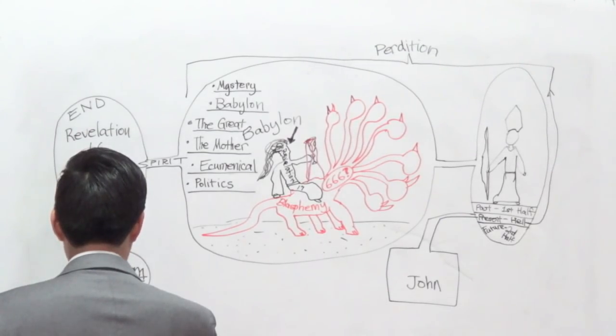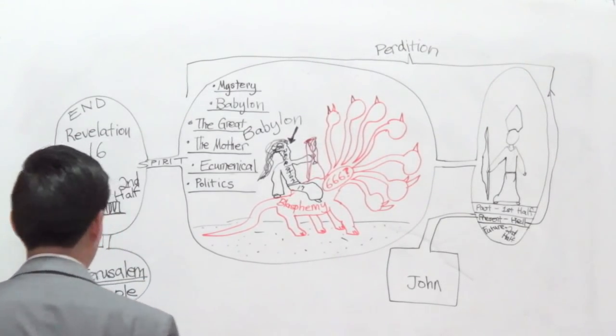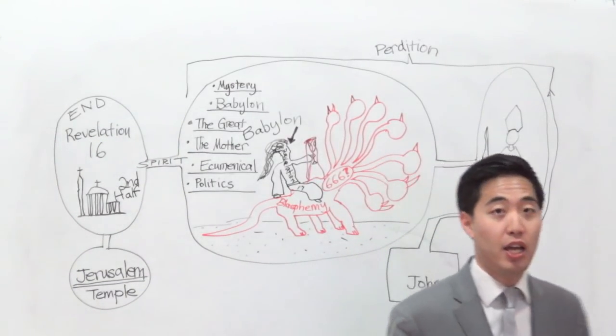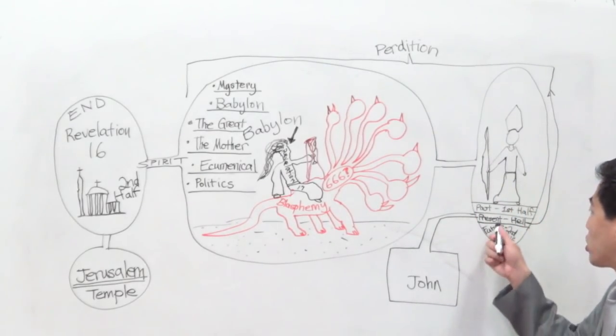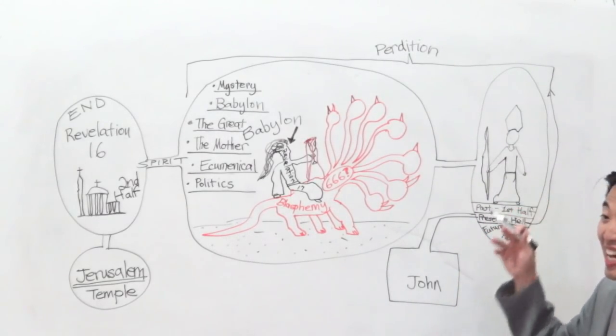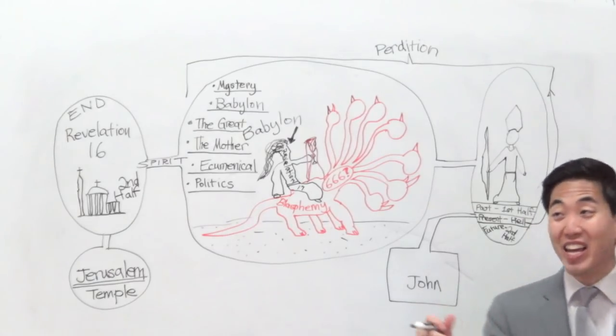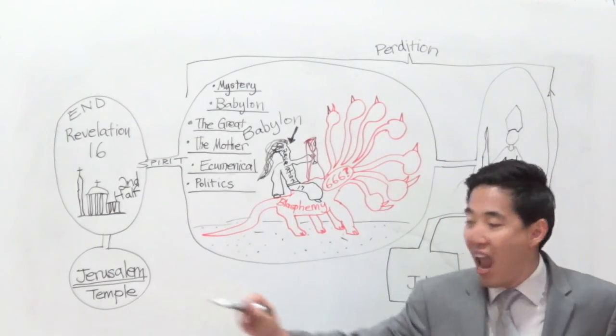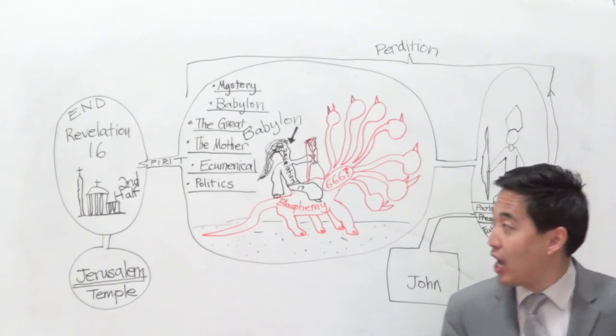When he gets born and comes out of perdition, look at this. Verse 4: Who opposes and exalts himself above all that is called God, or that is worshipped, so that he as God sitteth in the temple of God. See, he's entering God's temple in Jerusalem. When you read throughout the Bible about a temple on earth and God's temple, we know where that is. That's referring to Jerusalem.